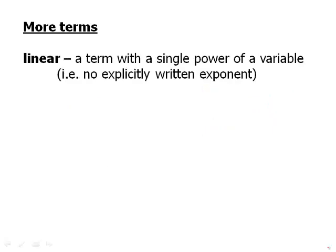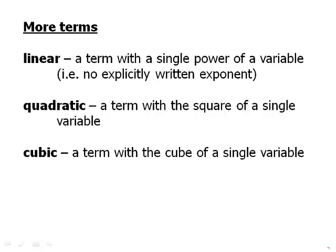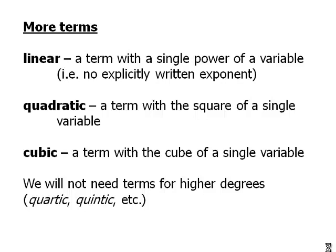A linear term is a term with a single power of a variable. So there's no exponent written. So just when you have a variable by itself or a number times a variable, that's a linear term. A quadratic is a term with a squared variable, x squared or y squared. A cubic term is a term with a cube of a single variable, y cubed or x cubed. And we will not need terms for higher degrees.